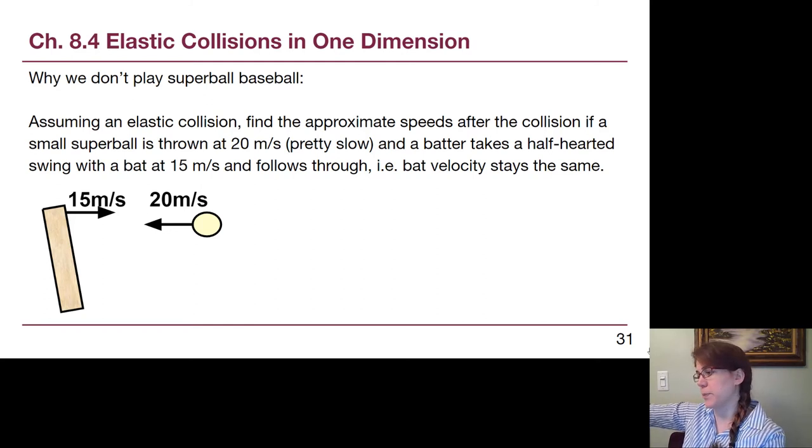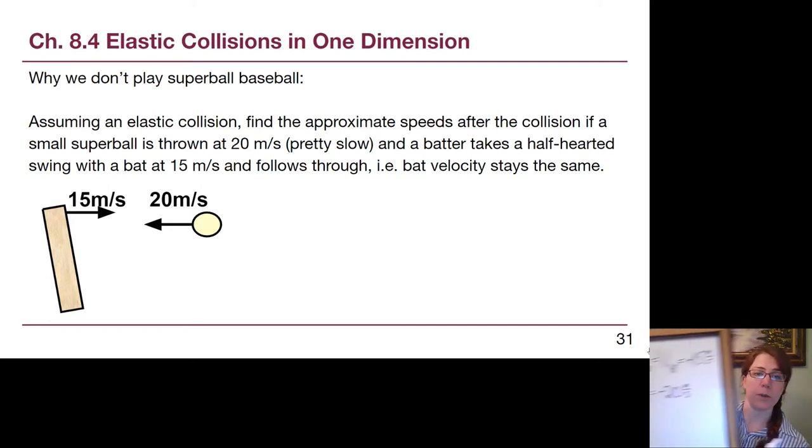Let's go through this same kind of situation with our equation here. If the batter follows through, for the bat, v1 initial is equal to v1 final and both of those are going to be equal to positive 15 meters per second, it's moving to the right. And for the ball, the initial speed of the ball is negative 20 meters per second because it is moving to the left.